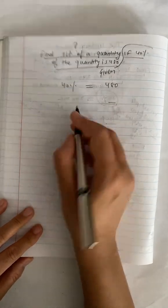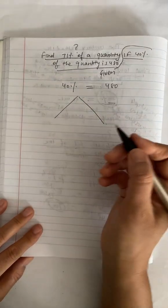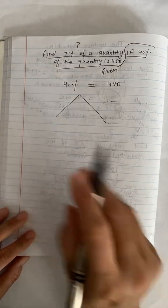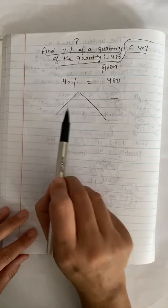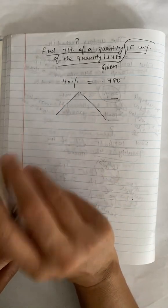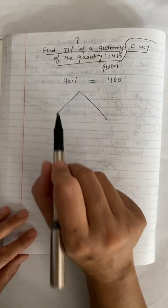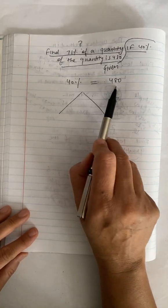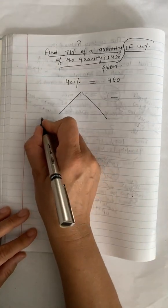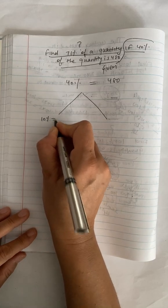This question you can do in two different ways, actually. The unitary method is not the only way to find certain percentages of a quantity. You can use various methods, but this lesson is focused on the unitary method. Here, 40% is 480.